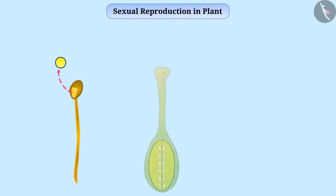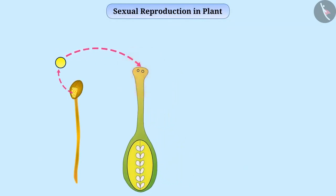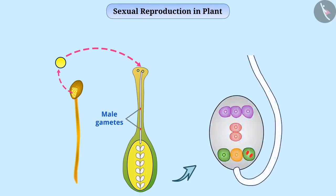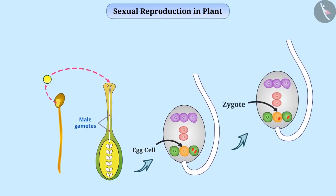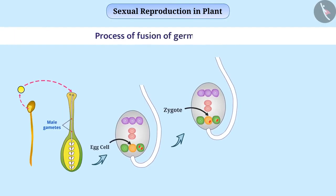When pollen grains land on the stigma of a flower, a tube develops from the pollen grain, which passes through the style and reaches the embryo sac of an ovule. Two male gametes enter the embryo sac from the pollen grain. One male gamete, released from the pollen tube, fuses with the female gamete to produce a zygote. The process of fusion of germ cells to form a zygote is called fertilization.